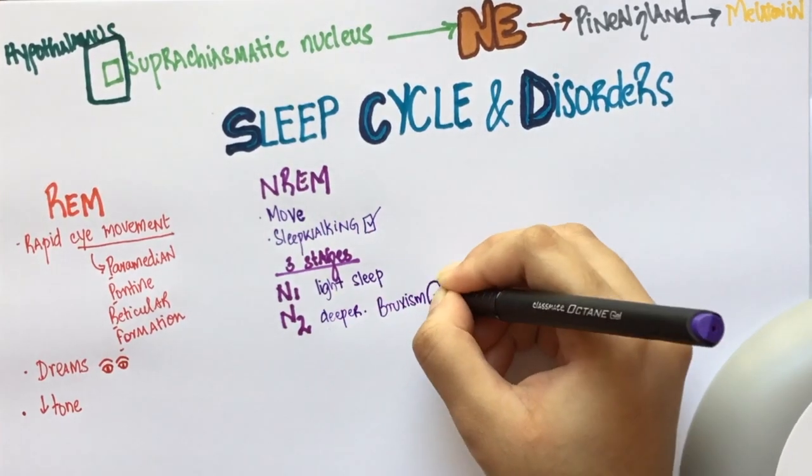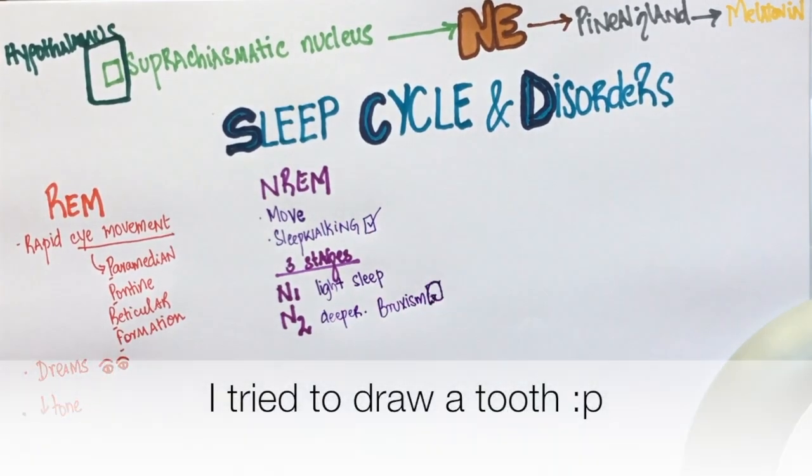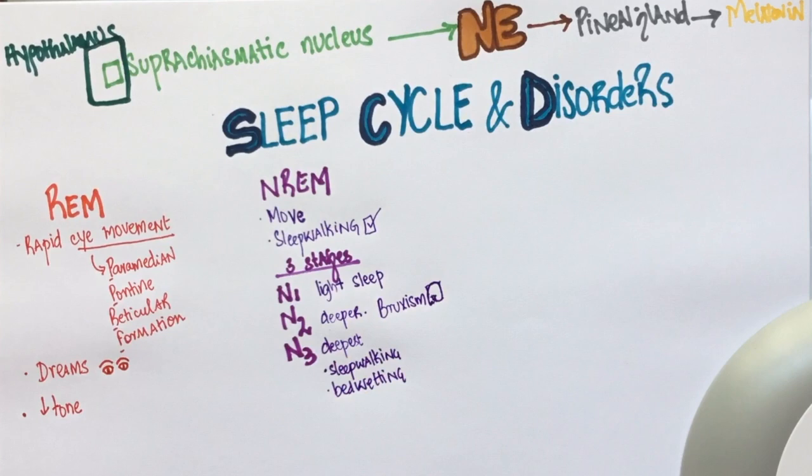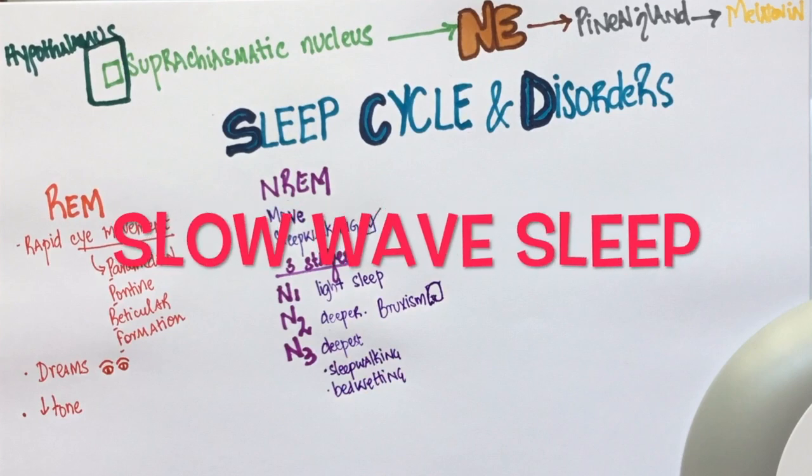Bruxism takes place in this stage. N3 is the deepest stage of sleep. Sleepwalking and bedwetting take place in this stage. This is also known as slow wave sleep.